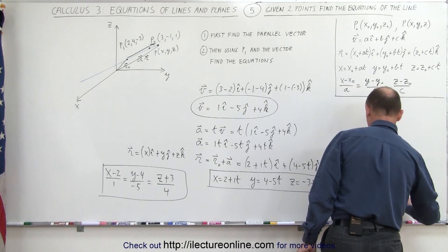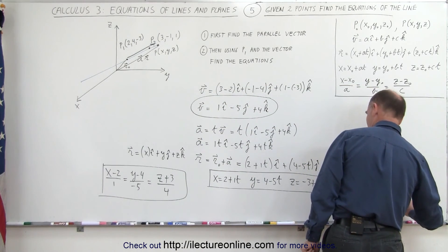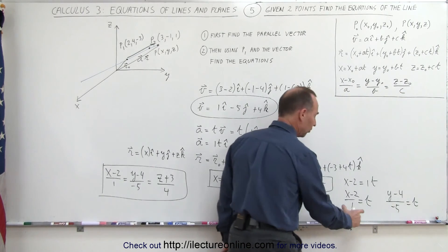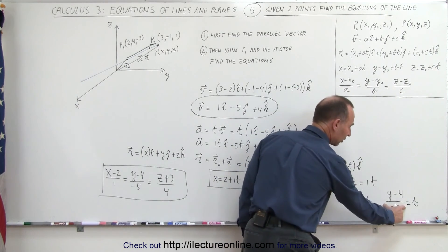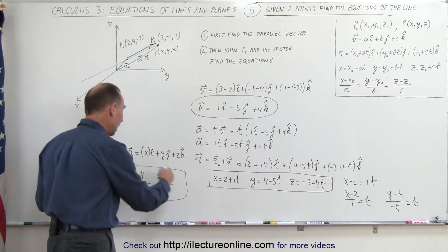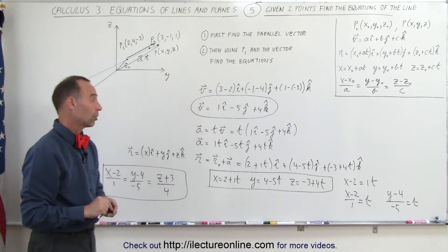I can do the same for the second equation, I can write y minus 4 divided by minus 5 is equal to t, and notice since the first equation is equal to t, the second equation is equal to t, I can then go ahead and set those all equal to each other, and end up with the symmetric equation.